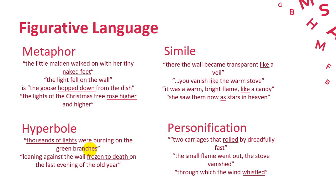The last figurative language is personification. The first example is 'two carriages that rolled by dreadfully fast' — 'rolled' is a verb normally used for humans but here is used for carriages, which is a noun. Another example: 'the small flame went out' — 'went out' means 'go,' which is a verb for humans applied to the flame. And lastly: 'through which the wind whistled' — 'whistled' describes the sound of the wind using a human verb. These are all examples of personification.